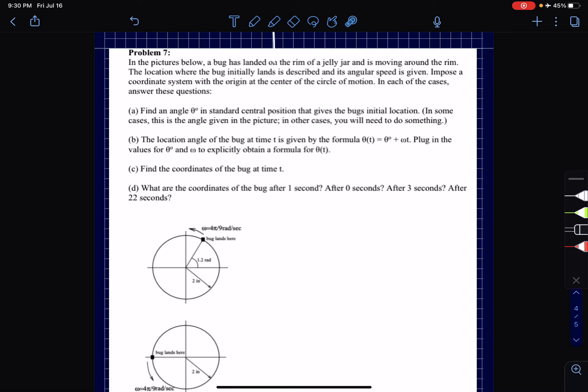Hey class, so I'm doing problem 7. It states in the picture below, a bug is landed on the rim of a jelly jar and is moving around the rim. The location where the bug initially lands is described and its angular speed is given. Impose a coordinate system with the origin at the center of the circle of motion. In each case, answer each of these questions.